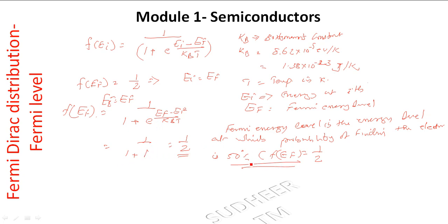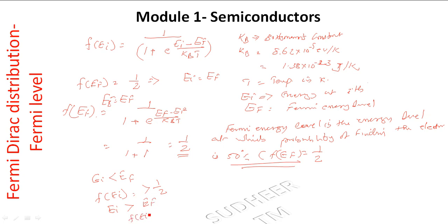For energy levels EI less than EF, the probability F(EI) is greater than 1/2. For energy levels EI greater than EF, the probability F(EI) is less than 1/2.